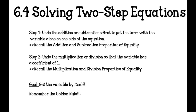The first step will be to undo the addition or subtraction first to get the term with the variable alone on one side of the equation. Remember that addition and subtraction are properties of equality — if I have a positive 2, I can add a negative 2 to cancel it out, but I have to do that to both sides because what you do to one side, you must do to the other.